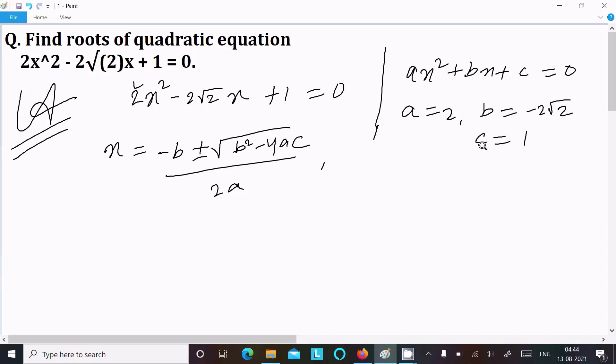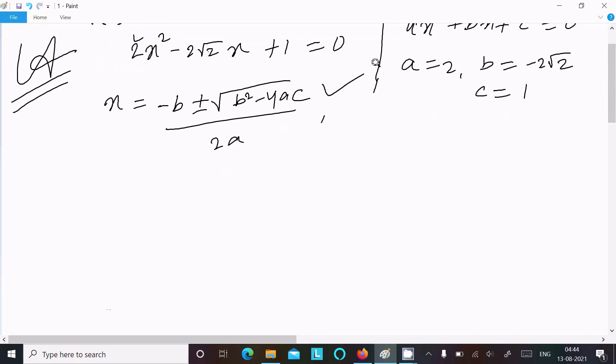Coefficient of c equal to 1. Put that abc value inside this formula. So here minus b, minus 2√2, then after plus minus root b².